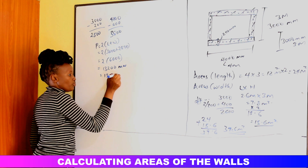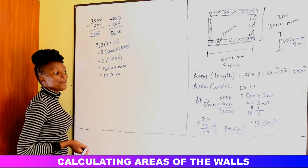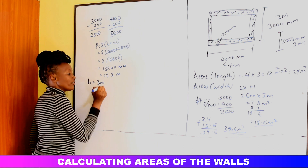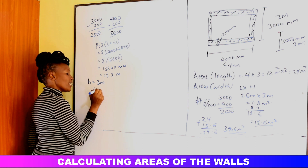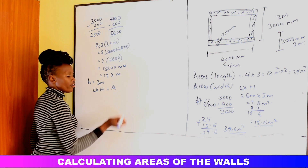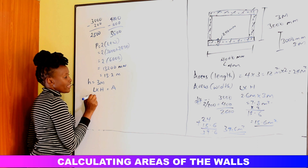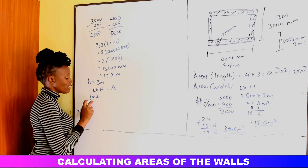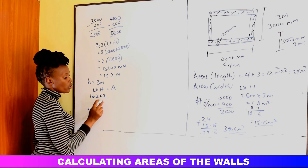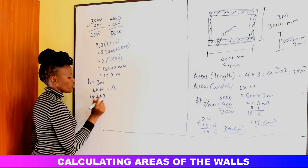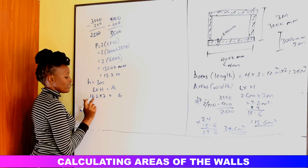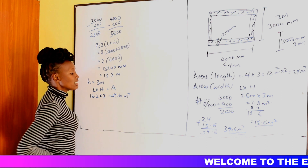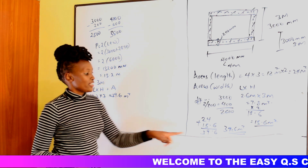We multiply the center line length by the height: 13.2 meters times 3 meters equals 39.6 square meters. We have got the same answer as the subdivision method. So in summary, that is what we call the center line method — instead of separating long and short walls, we trace through the center and multiply by height.